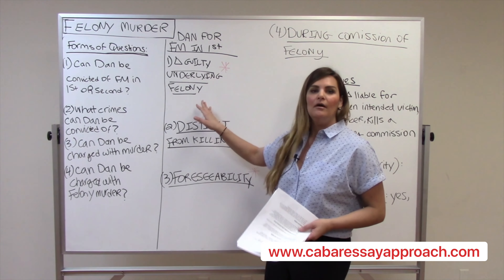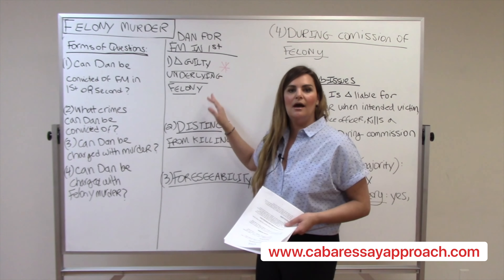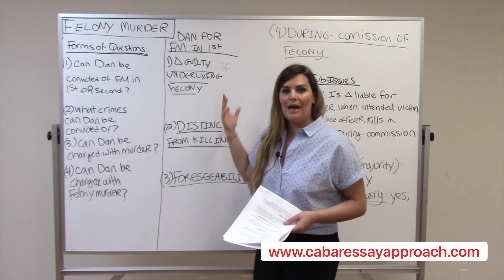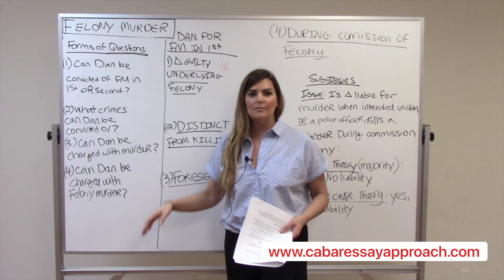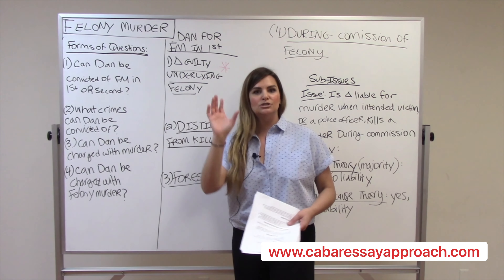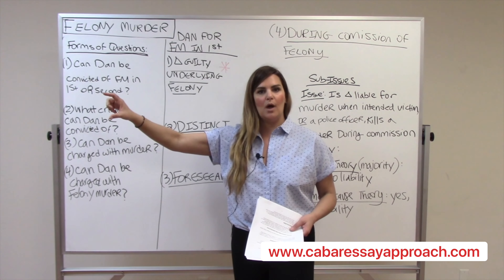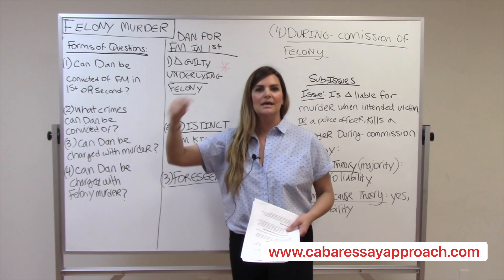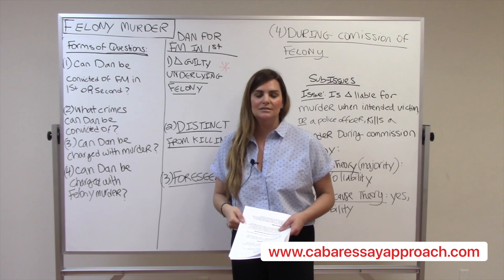So if you have time, a full-blown IRAC of each element of the felony would be a great way to maximize your points. But if you're pressed for time — maybe you have three or four more crimes to address — just do a heading. Let's say it's robbery: give the rule for robbery and give a summation in your analysis, hitting all the potential issues that need to be proven.